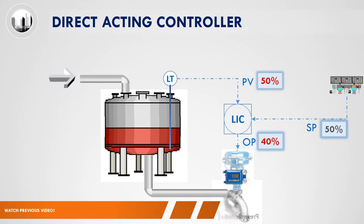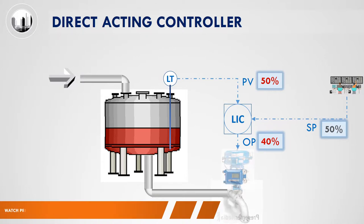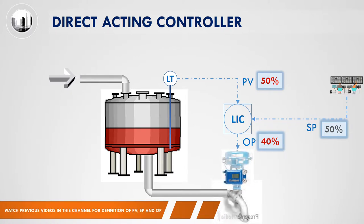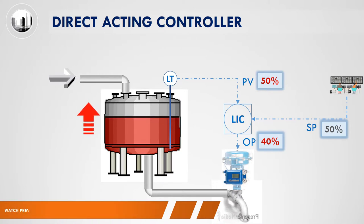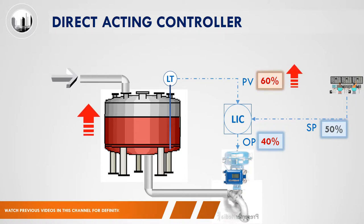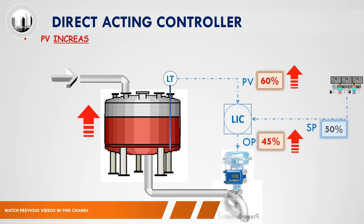This diagram shows an example of a direct acting controller. As shown in this diagram, the control valve is located at the outlet of the tank. In this example, we will evaluate the scenario when the level in the tank increases. The increase of the tank level will be measured by the level transmitter. When the tank level increases, the control valve at the outlet of the tank will open more to allow the liquid to be drained faster.